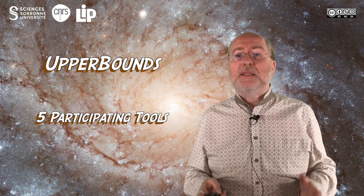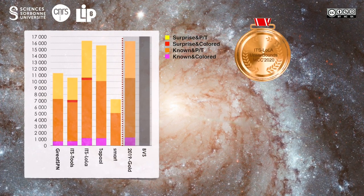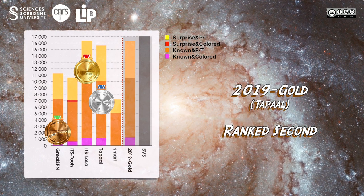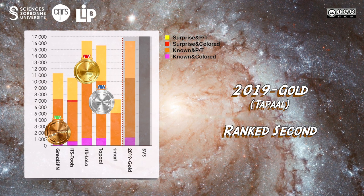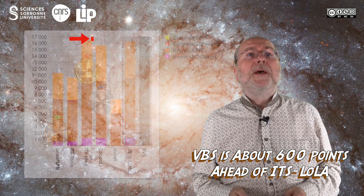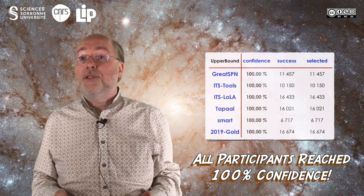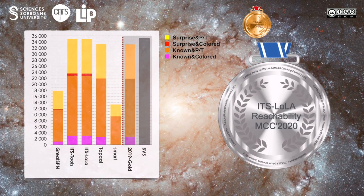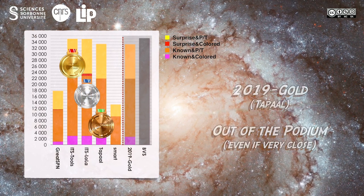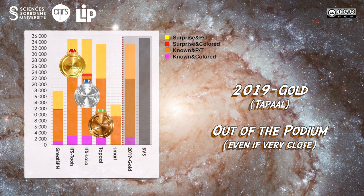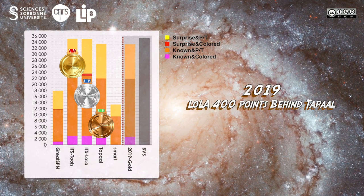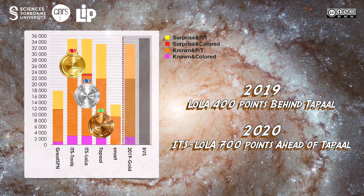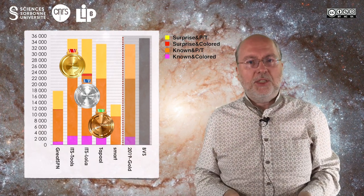For the upper bound examination, five tools did participate. The gold medal goes to ITS-Lola, then TAPAL grabs the silver one, and GreatSPN gets the bronze medal, followed by ITS-Tool and SMART. The 2019 gold medal was TAPAL and it would have been ranked second. All tools reached 100% confidence rate. For the reachability family, the gold medal goes to ITS-Tool, then ITS-Lola grabs silver, and TAPAL gets bronze. Lola's association with the reduction system of ITS-Tool pushed ITS-Lola's score about 700 points ahead of TAPAL — a typical example of how association of techniques can bring large benefit.